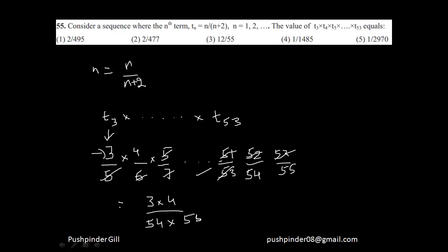So if I further reduce this, this is going to be 2 times 2 and 7, and this is going to be 3 times 9, and I'll get my answer to be 2 upon 495. So this is going to be my answer.